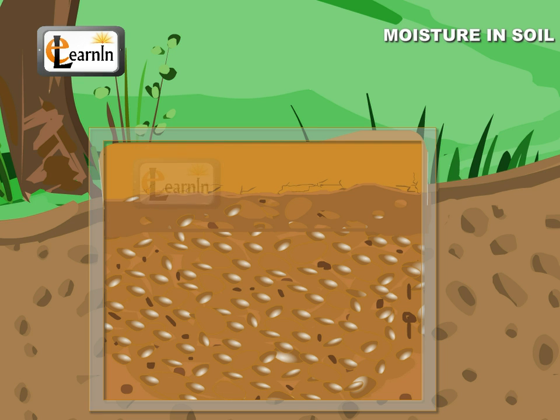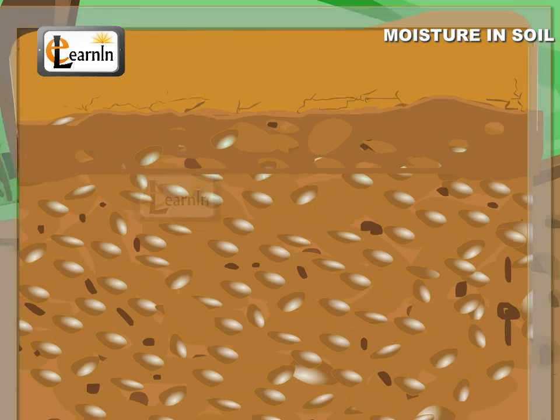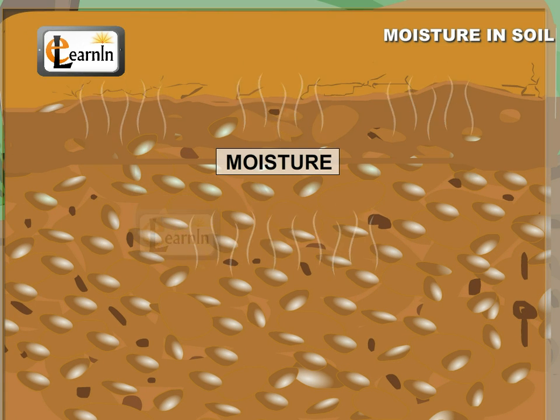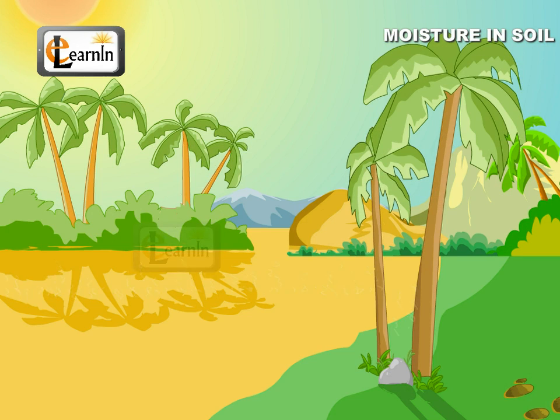Due to the heat, the moisture from the soil evaporates and the air above it seems to shimmer because of the condensed water vapor.